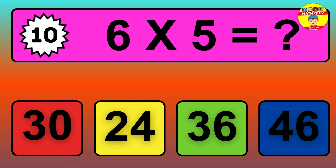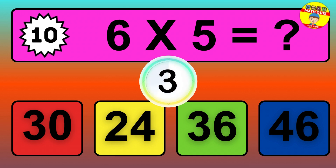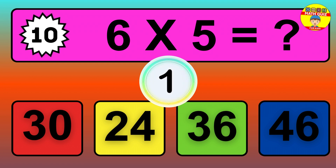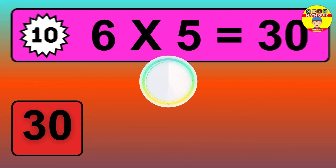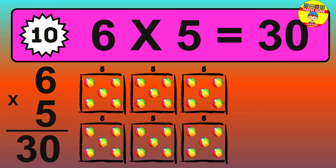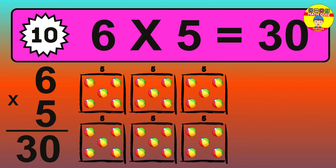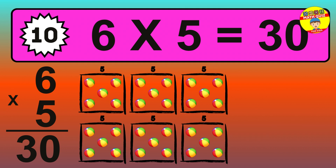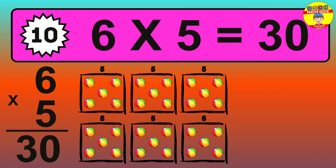Question 10. 6 times 5 equals what? The answer is 6 times 5 is 30. To calculate, we have 6 groups with 5 balls each one. So, how many balls do we have? 30 balls.